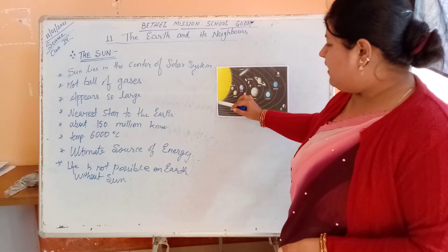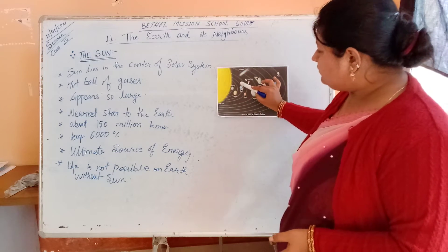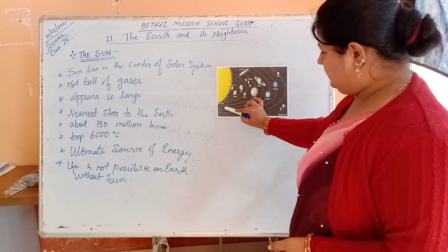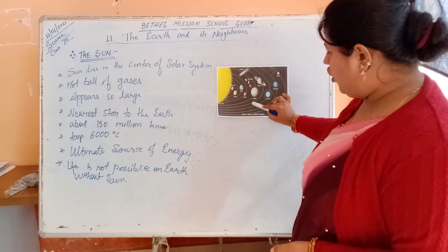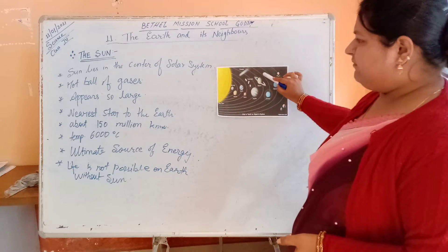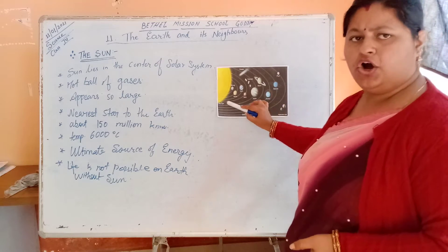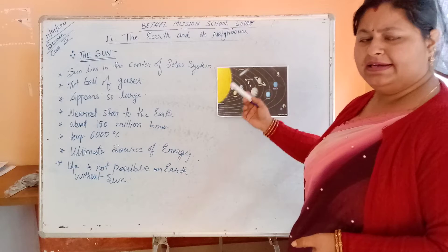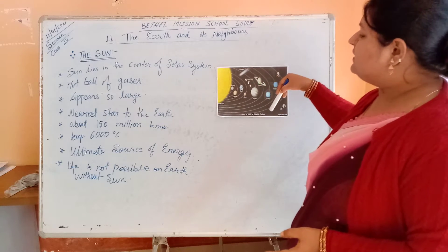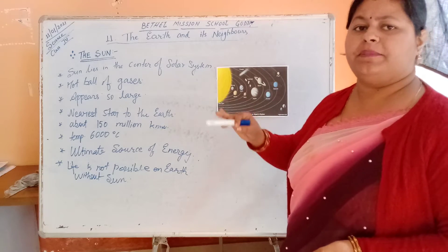Sun is a ball of fire and these are the orbits on which different heavenly bodies rotate or orbit around the sun. They revolve around the sun on their fixed orbit.